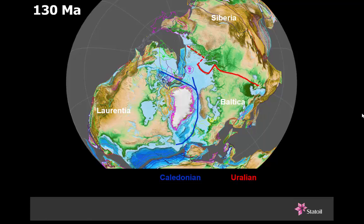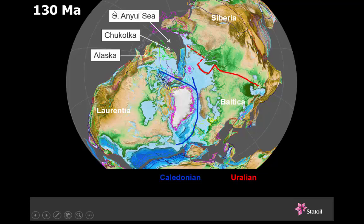The blue belt here is the Caledonian belt, representing the collision between Laurentia and Baltica. The red one here is the Uralian belt, representing the collision of Baltica and Siberia. The Caledonian culminated about 400 million years ago; the Uralian culminated in essentially the Triassic, 250 million years ago. Where those two orogenic belts hit the Pacific — the Paleo-Pacific margin — we've got this interesting indentation or re-entrant usually called the South Anuiy Embayment. What we're going to see is this chunk of continent — parts of present-day Alaska and also Chukotka in Siberia — rotating counterclockwise to fill this hole as subduction consolidates along the Pacific margin.